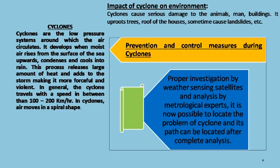The next disaster is cyclones. Cyclones are low-pressure systems around which air circulates. They develop when moisture rises from the surface of the sea upwards, condenses, and cools into rain. This process releases a large amount of heat and adds to the storm, making it more forceful and violent. Cyclones generally travel at speeds between 100 to 200 kilometers per hour in a spiral shape.